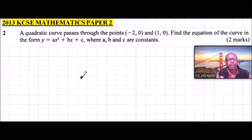Question number 2. We are told a quadratic curve passes through the points minus 1, 0 and 1, 0. Find the equation of the curve in the form y equals ax squared plus bx plus c, where a, b, and c are constants.